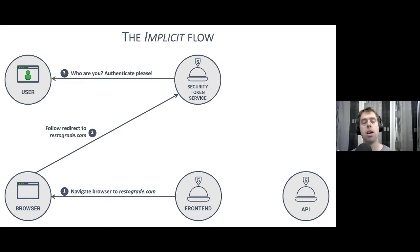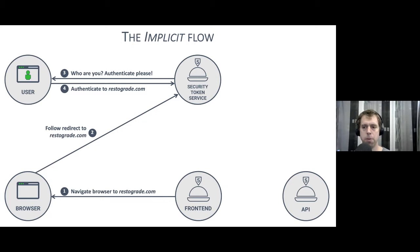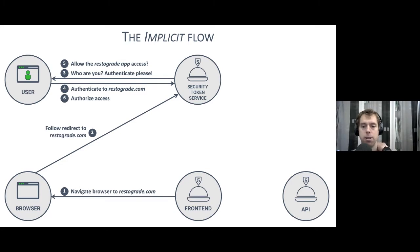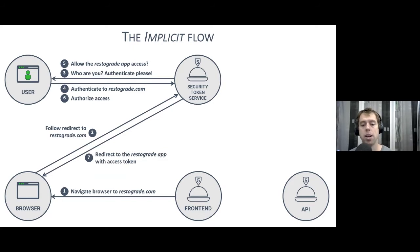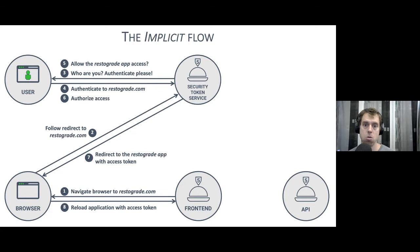The browser navigates to the STS — in this case RestorGrade's STS — which has no idea who the user is, so it prompts for authentication. The user authenticates, providing their credentials. If there's multi-factor authentication, it would be enforced here too. Then there's an optional authorization step: the STS asks the user whether they really want this front-end application to access that API in their name. Once authorized, the STS returns an access token through the browser via another redirect, which triggers the loading of the front-end application.